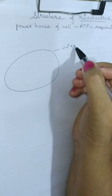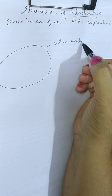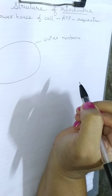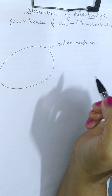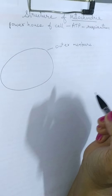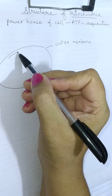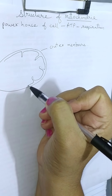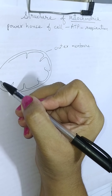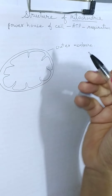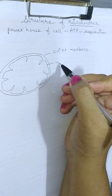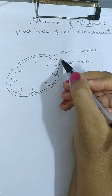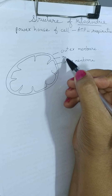This is the outer membrane. The outer membrane is permeable — it allows substances to move in and out of the cell. The inner membrane is thrown into folds. In between the outer membrane and the inner membrane, there is a space called the inter-membrane space.